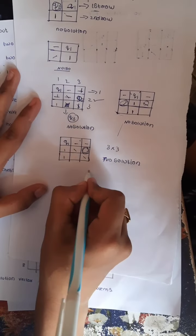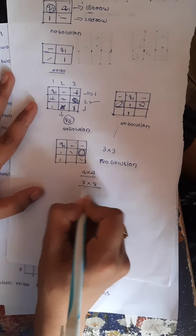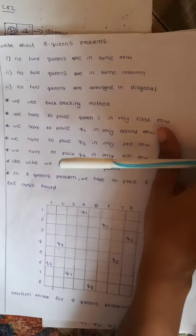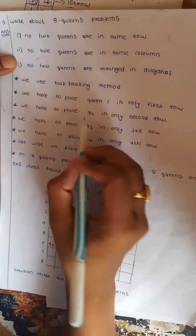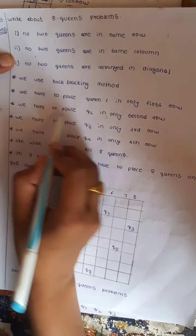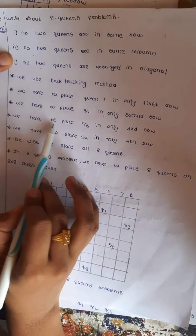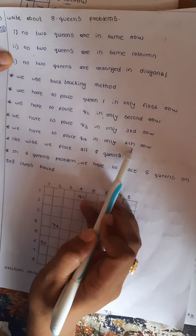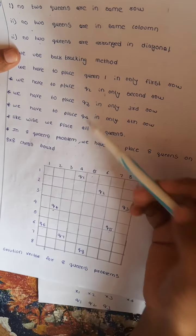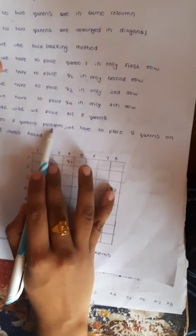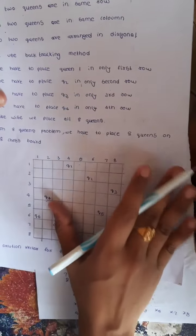We have to check for the 4x4 and 8x8. Now I am going to explain the 8x8 Queens problem. We know that we have to place Queen 1 in the 1st row only, Queen 2 in the 2nd row only, Queen 3 in the 3rd row, Queen 4 in the 4th row — likewise, all Queens are placed in their respective rows only. In the 8 Queens problem, we have 8 Queens to place on an 8x8 chessboard, which is 64 boxes.